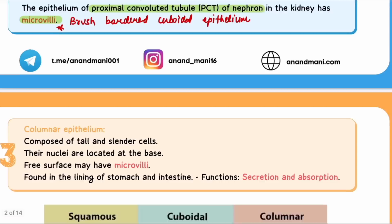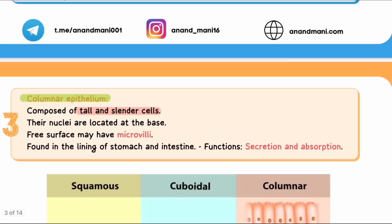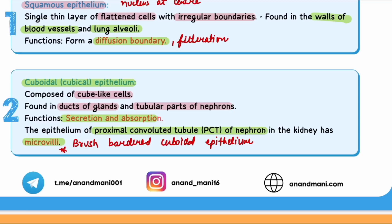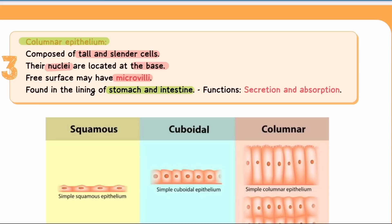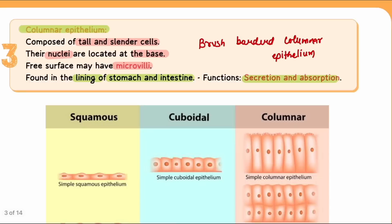The third type is columnar epithelium. Columnar epithelium cells are tall and slender. An important difference is that their nucleus is present at the base, whereas in squamous and cuboidal epithelium the nucleus is in the center. Microvilli can also be present, increasing the surface area for absorption. Examples include the lining of the intestine, stomach, and surface of the liver. Their function is secretion and absorption.